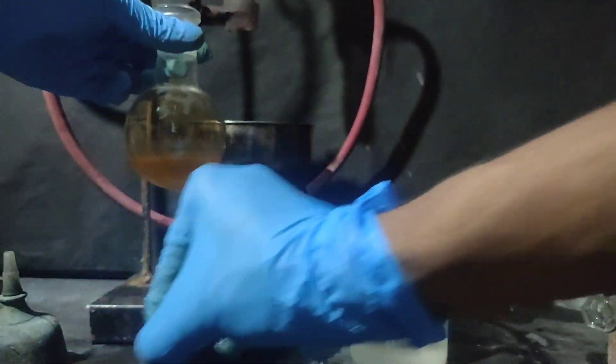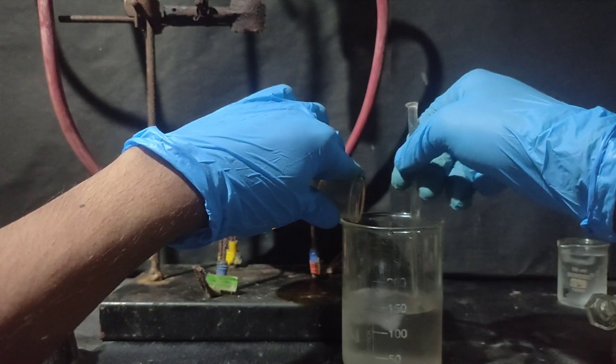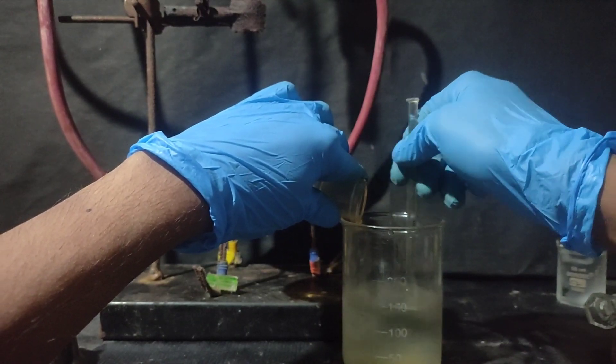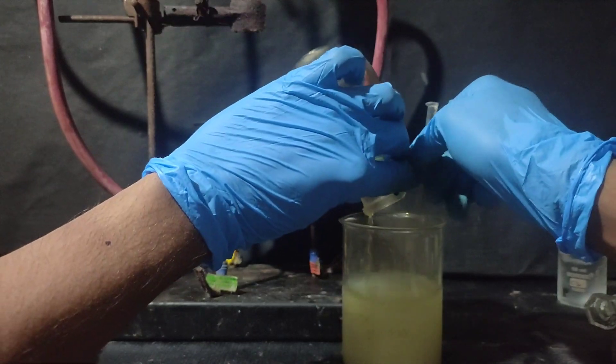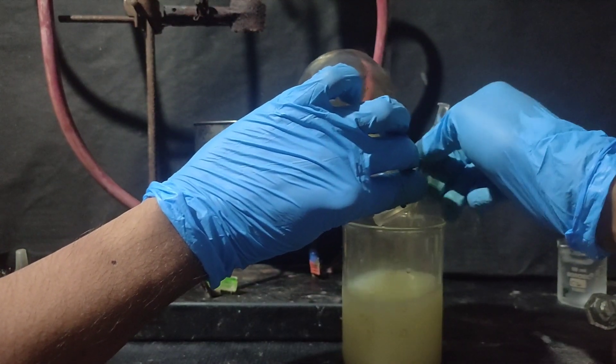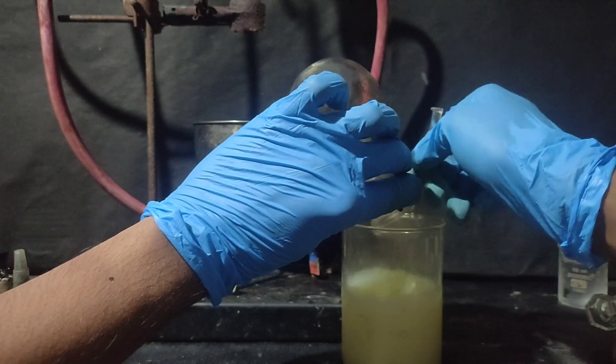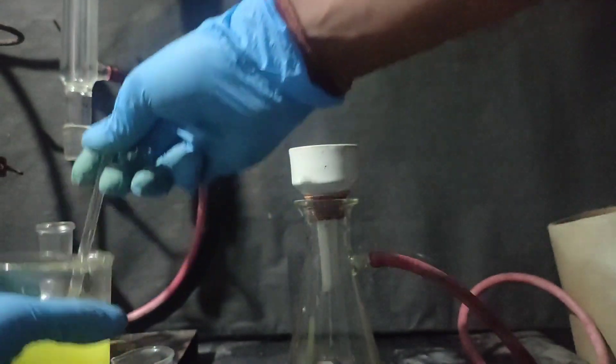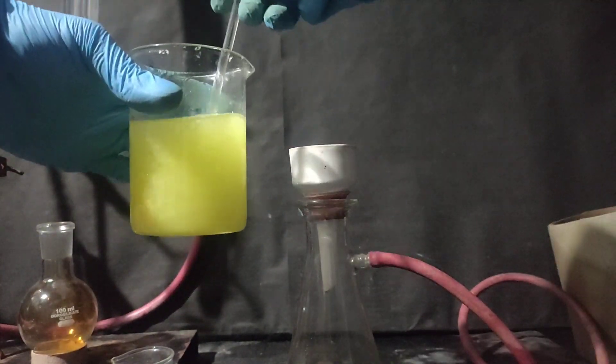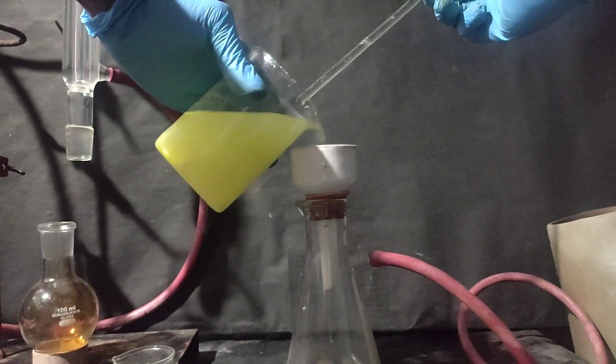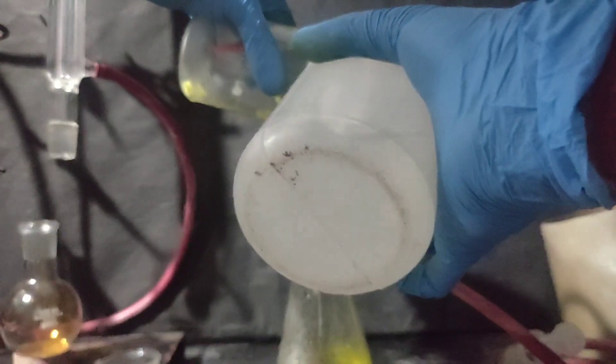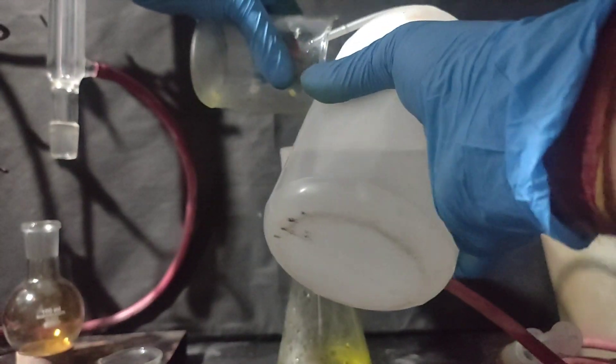After 40 minutes, the contents of the round bottom flask was slowly poured into ice-cold water. You can see that meta-dinitrobenzene precipitates out. The precipitate of meta-dinitrobenzene was filtered off using vacuum filtration and the precipitate was washed with cold distilled water.